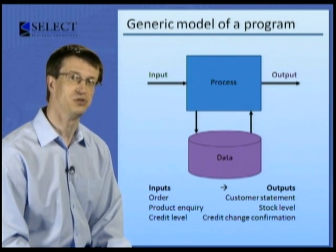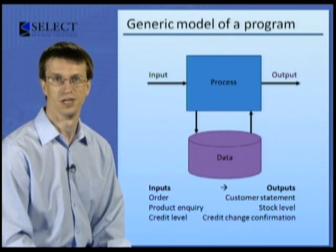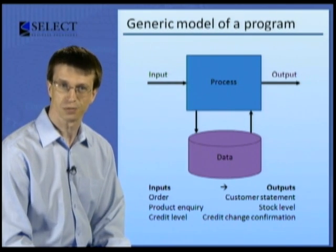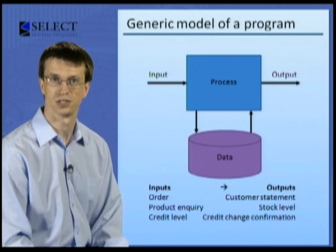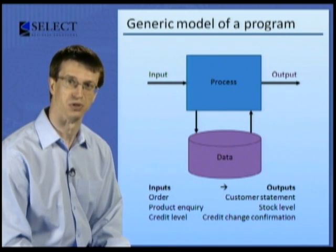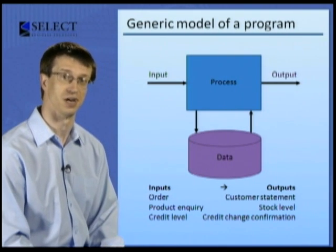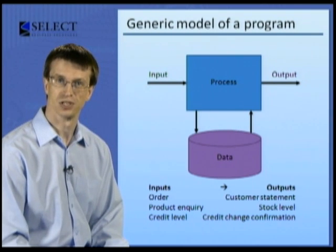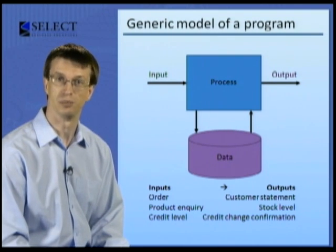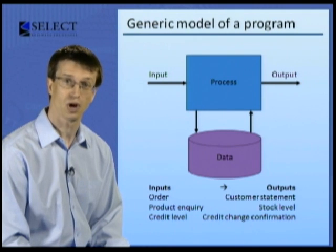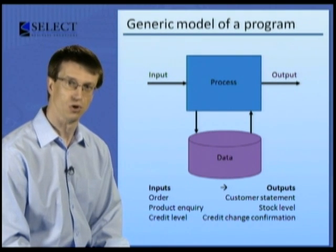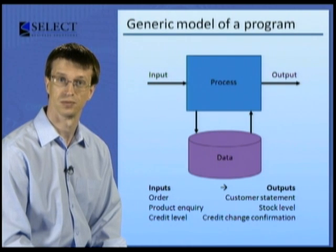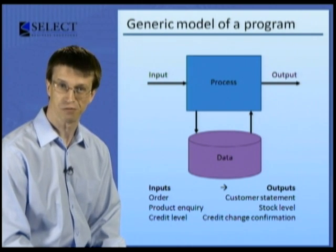You can't produce something from nothing, and so that computer program needs something on which to work — something to start off that process. In other words, input: the arrow to the left of the diagram. Using the examples of output we discussed, the input could be an order, a simple inquiry quoting a product number, or the level to which credit control wishes to set for this customer.